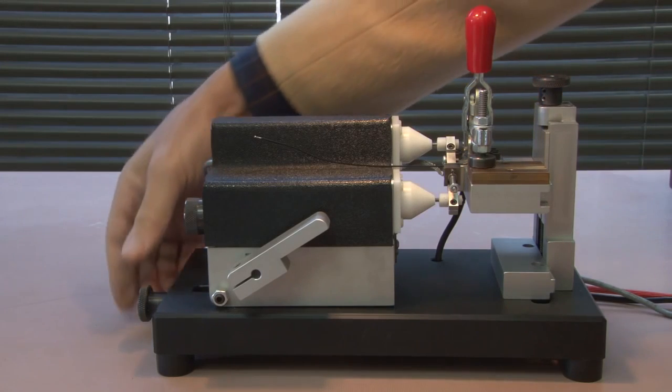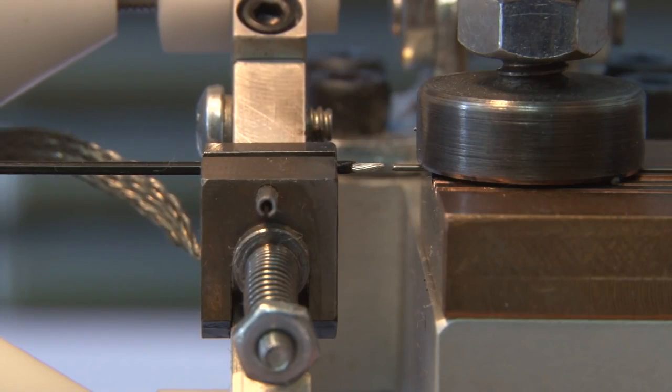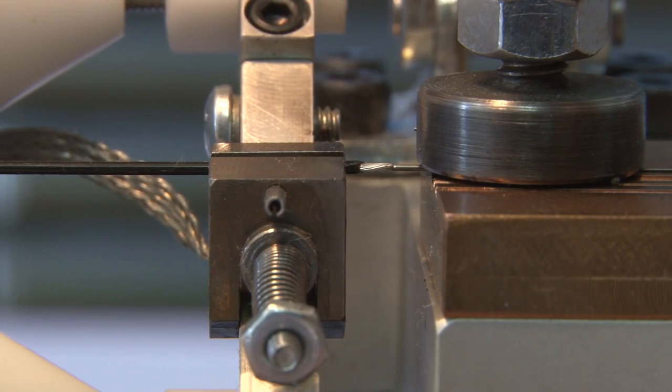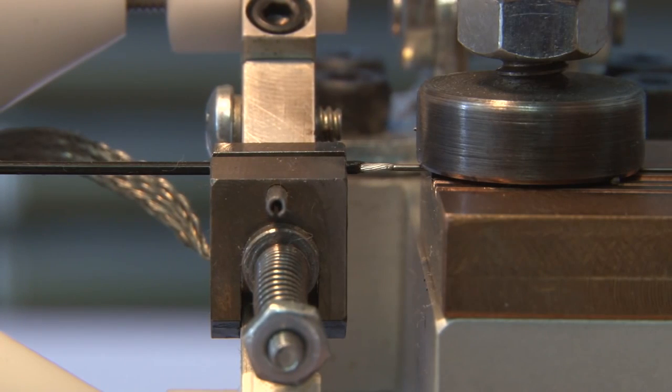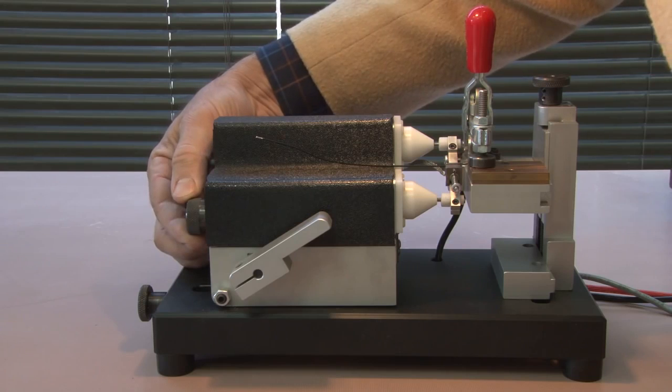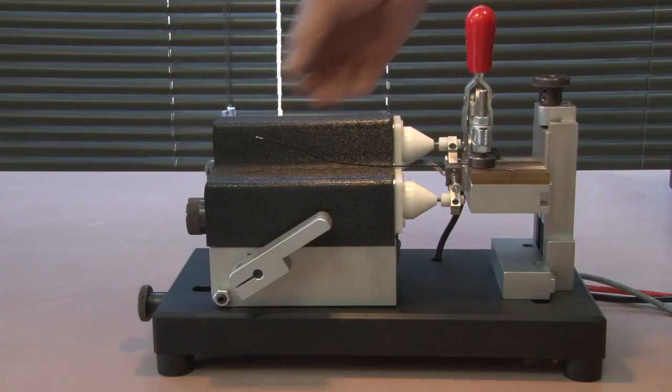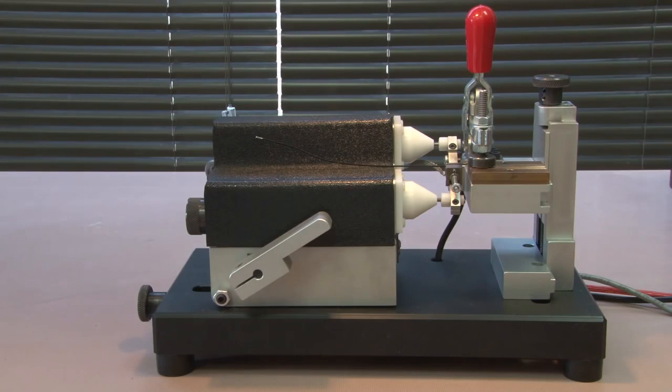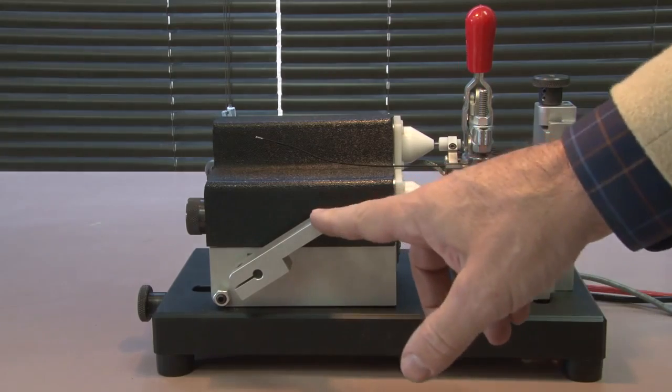Once we have the X and the Y aligned then we bring them together to make a zero reference point for the weld. We set a gap and now the setup is complete and we're ready to make the weld.